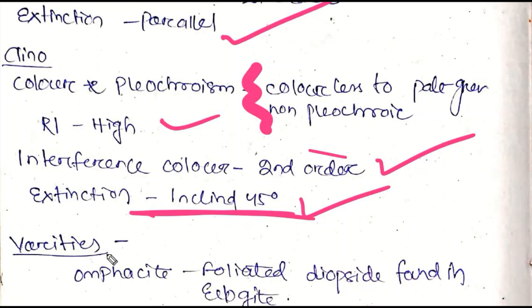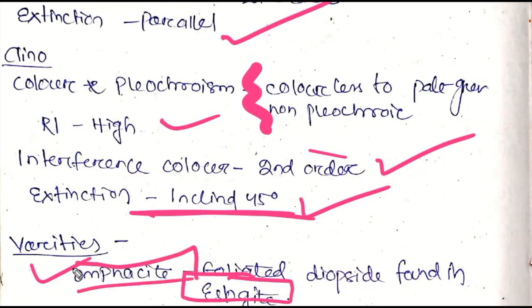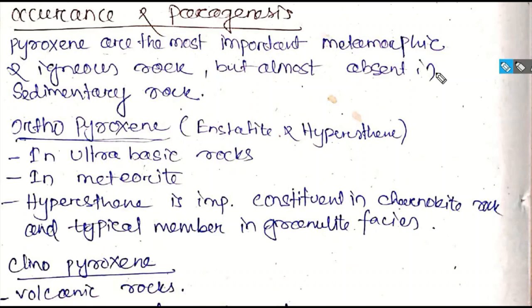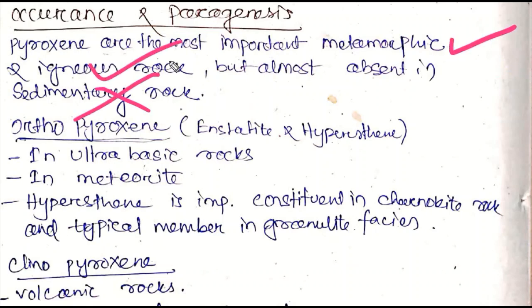Varieties: omphacite is a foliated diopside found in eclogite, which is a metamorphic facies. Pyroxenes are most important in metamorphic and igneous rocks, but are almost absent in sedimentary rocks. Sedimentary and some metamorphic rocks do not typically contain pyroxene.